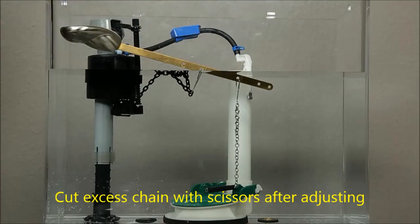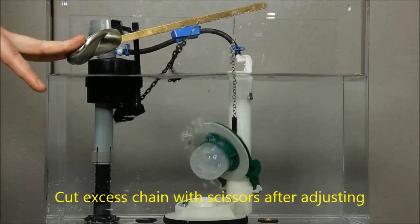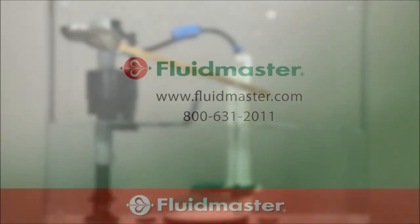Adjust the slack in the chain as needed so that the leak sentry disengages and the tank refills automatically with every flush.